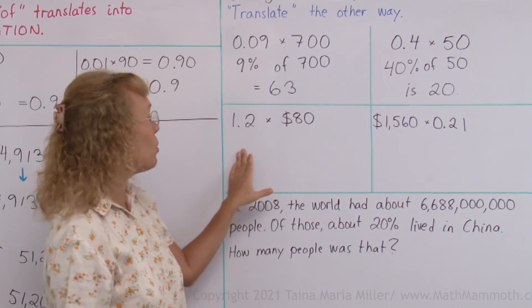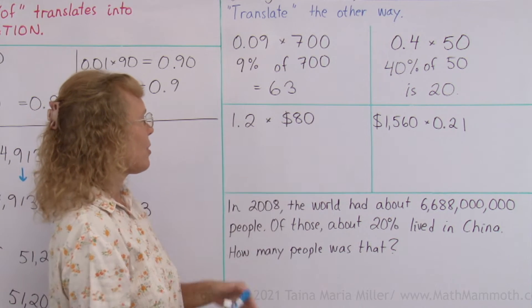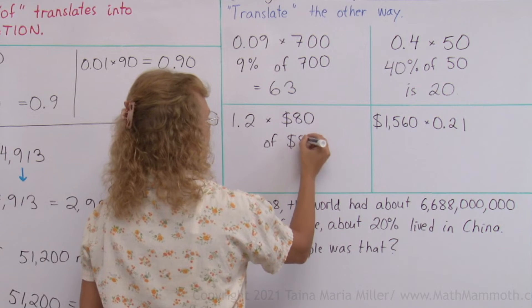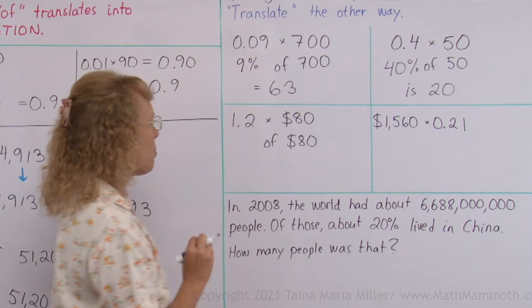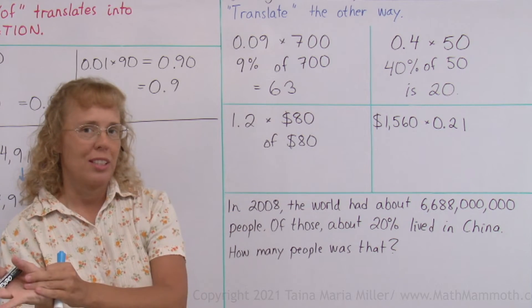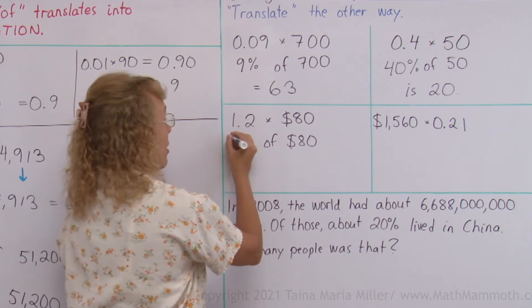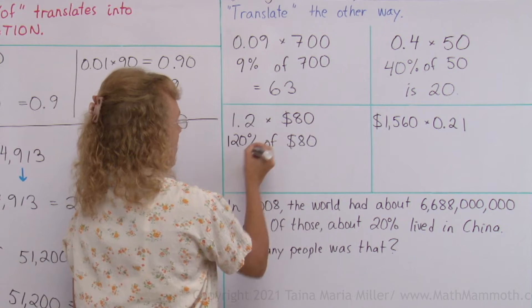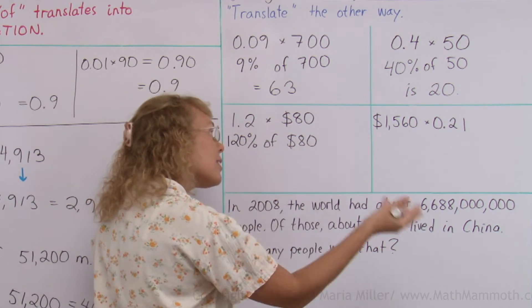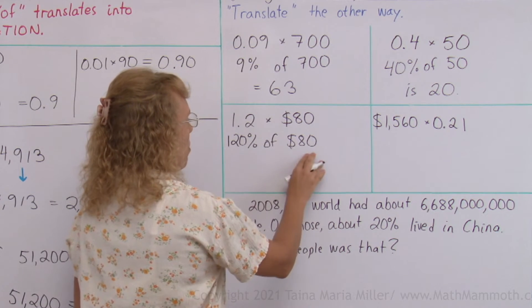1.2 times $80. This would be the 'of'. How about 1.2 as a percentage? Now 1 is 100%. So 1.2 is 120%. So 120% of $80. Maybe this is a price and they're going to increase it. So it's going to be more now.